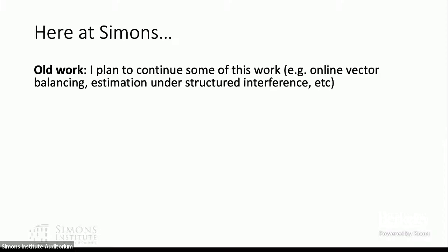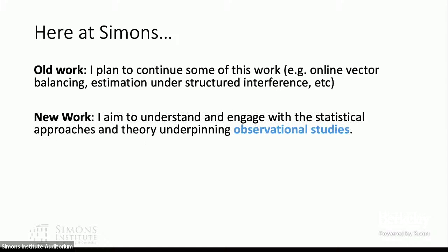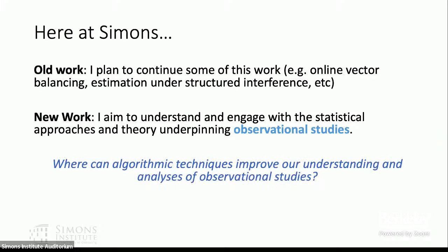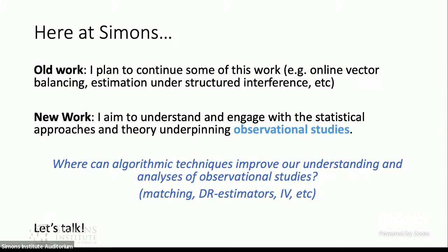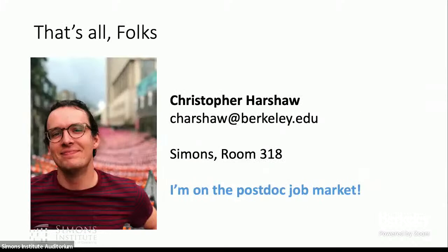Here at Simons I plan to continue some of this work. I want to investigate vector balancing in the online setting, keep investigating estimation under structured interference, and also begin new work understanding statistical approaches and the theory underpinning observational studies, which I know less well. The question I'm trying to answer is: where can algorithmic techniques improve our understanding and analyses of observational studies? I'm interested in matching, doubly robust estimators, instrumental variables, and related topics. If you think there's something relevant to tell me, I'd love to hear it. You can find me in office room 318, and I'm currently on the postdoc job market.